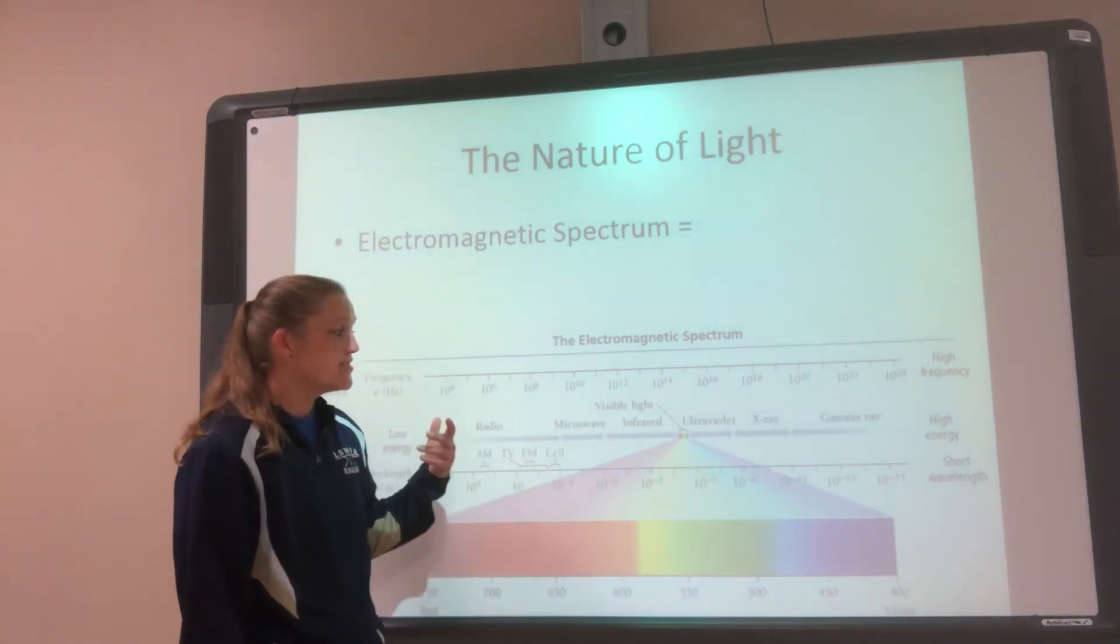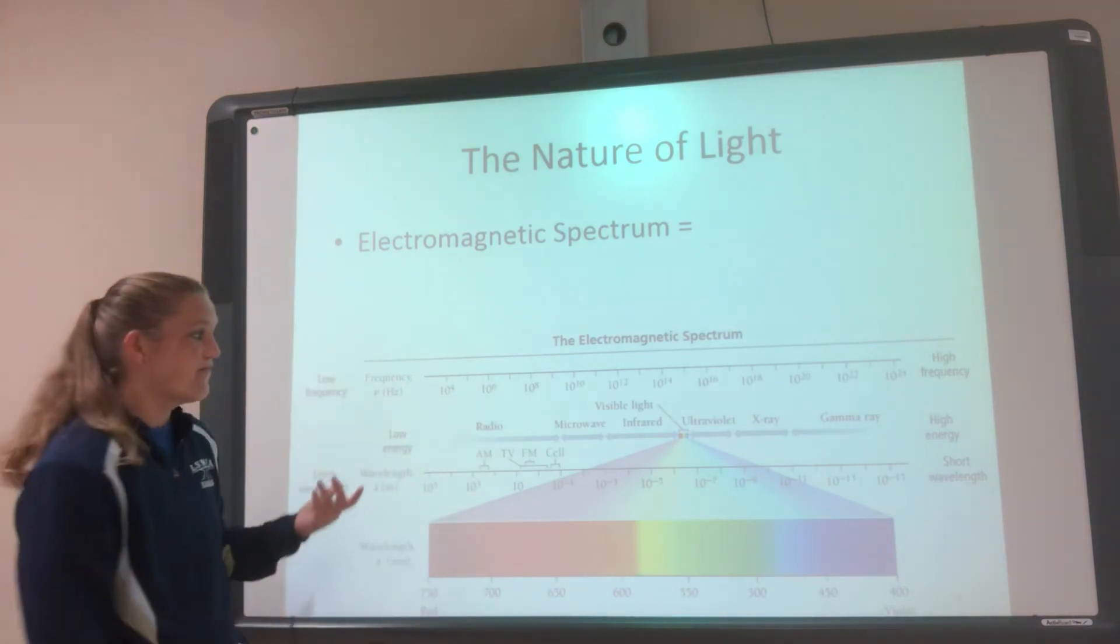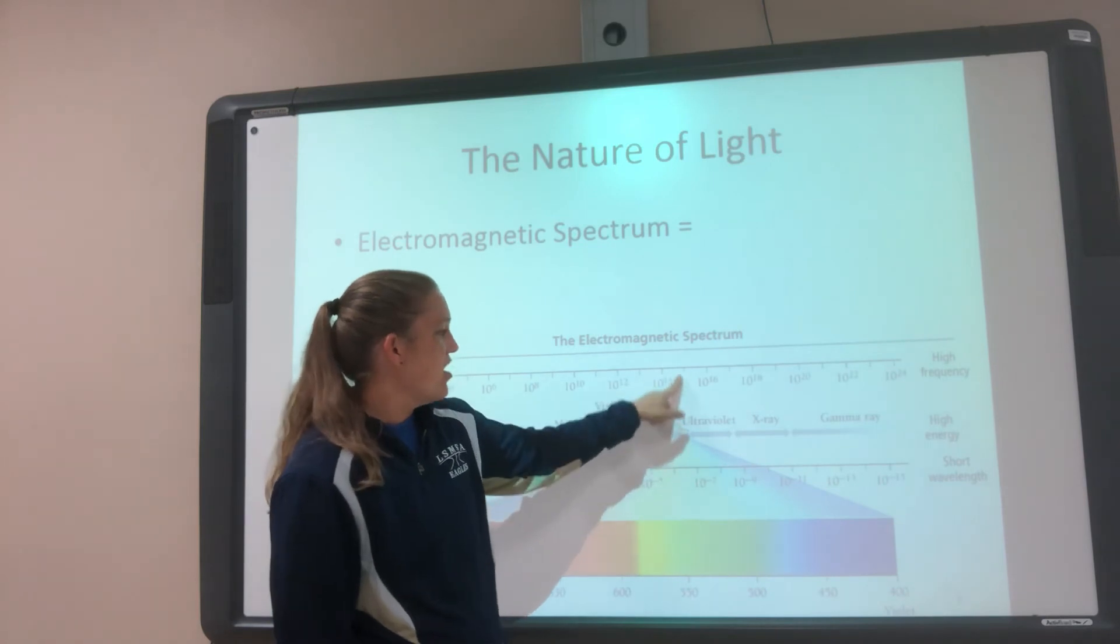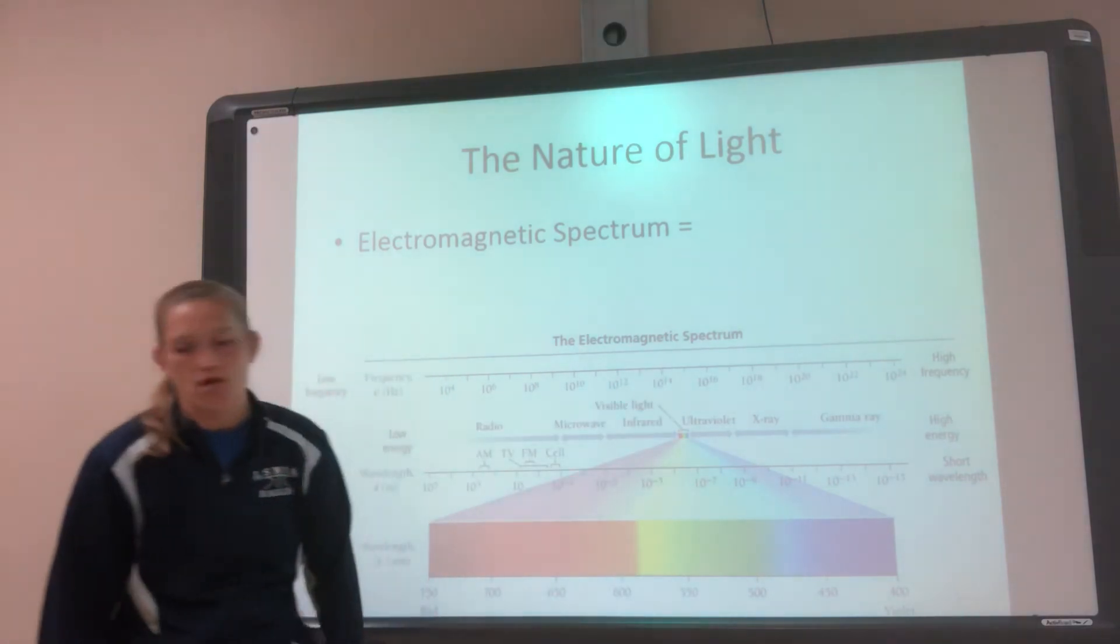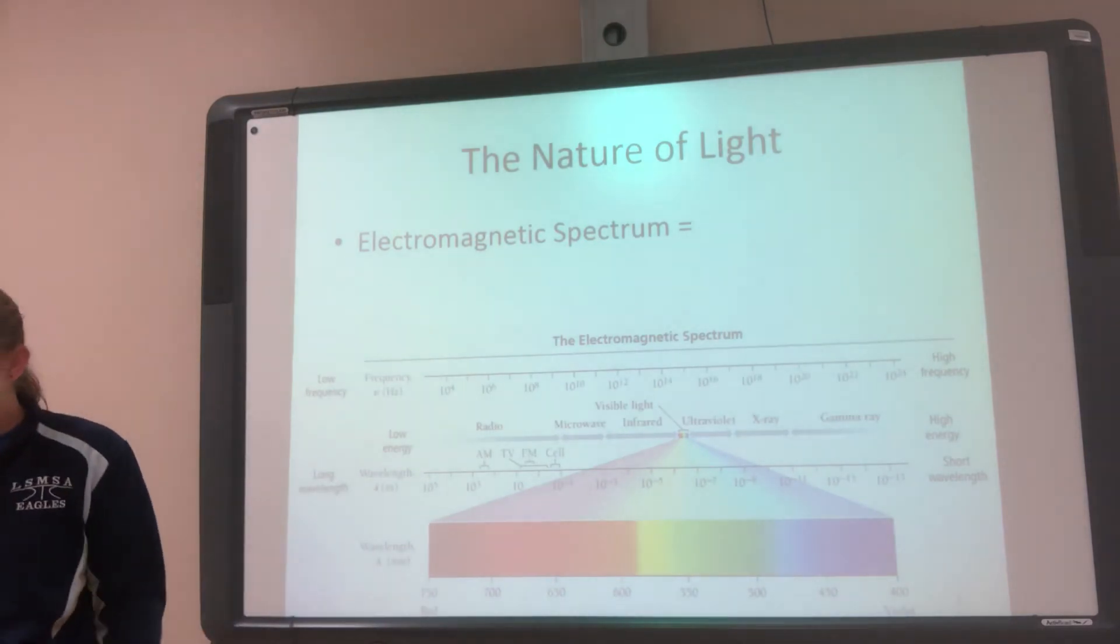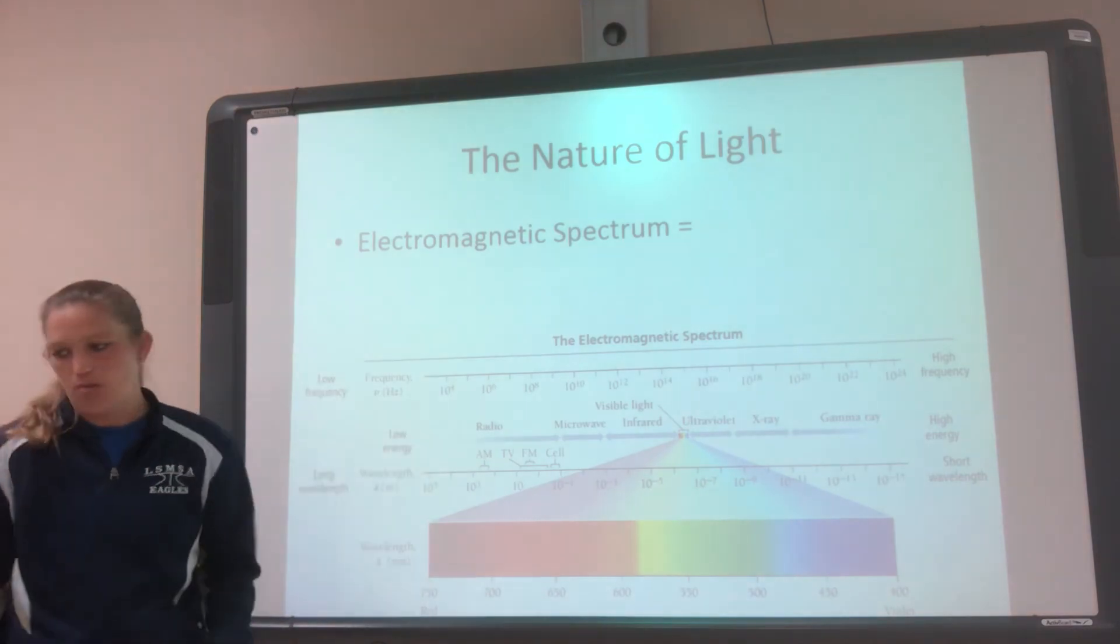So our frequency range is 10 to the 4th to 10 to the 24th. Your frequency should be some 10 to the positive number. Our number was 10 to the positive 14th, which was right here, kind of close to our visible light spectrum. So that's pretty much the only way, to make sure it's a 10 to a positive number.